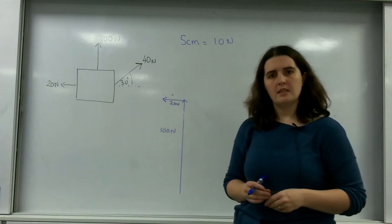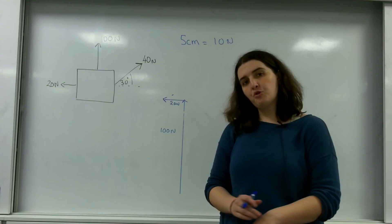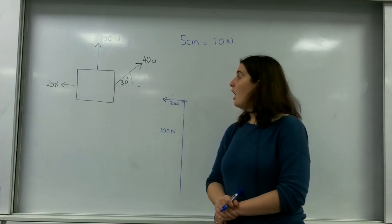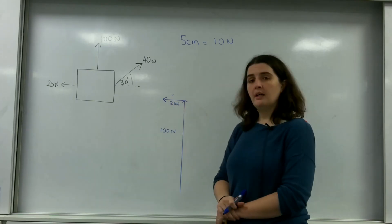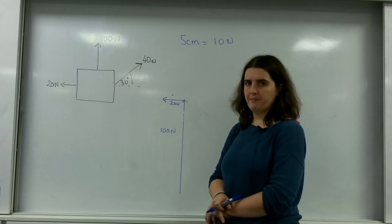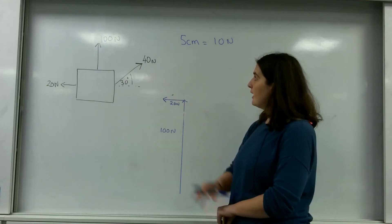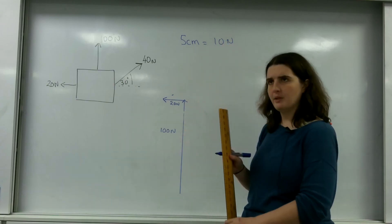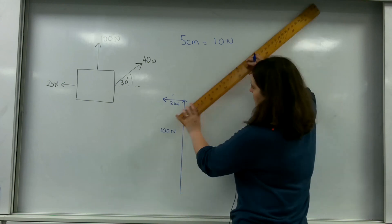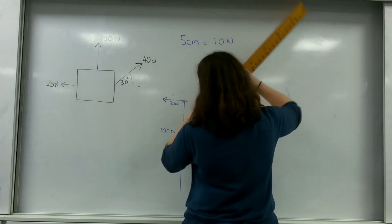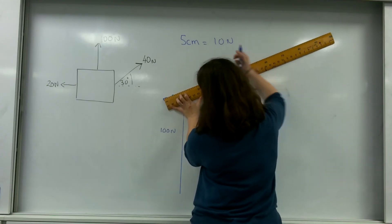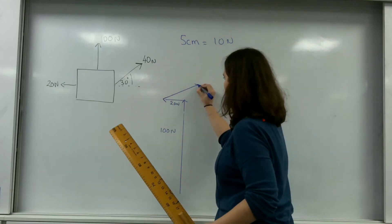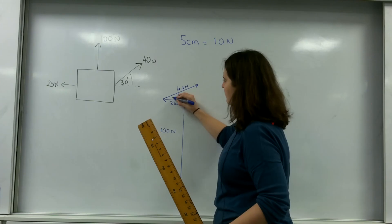When I draw my next vector for my 40 newtons, I have to make sure that it crosses through this 30 degrees. So 40 newtons: 5 centimeters is 10 newtons, that means 40 will be 20 centimeters. So I draw from here to 20. That's my 40 newtons at 30 degrees.